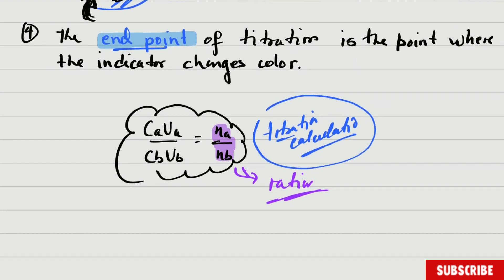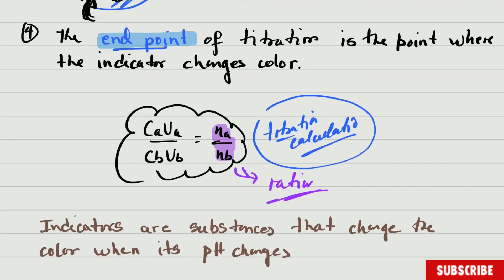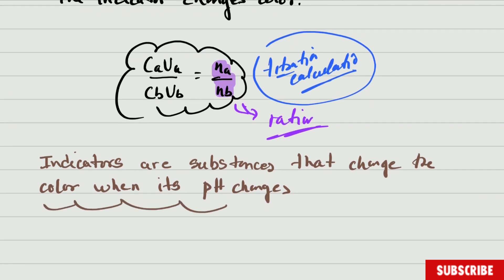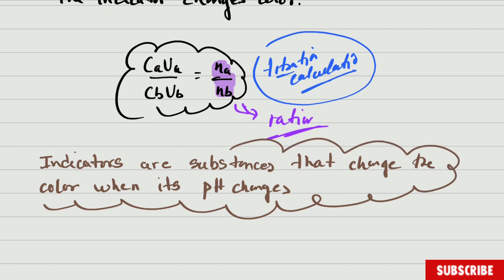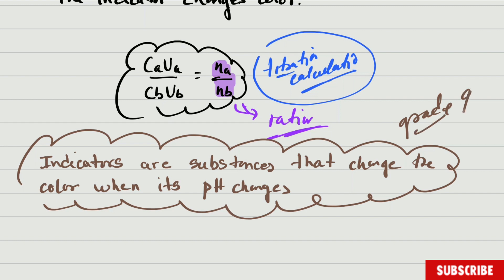Now let's speak quickly about indicators. Indicators are substances that change color when their pH changes. This concept is known from previous grades — you've done it in grade 9. You add an indicator to any substance and the color changes, telling you if the substance is acidic or basic. Different indicators have different colors depending on the type of indicator being used.